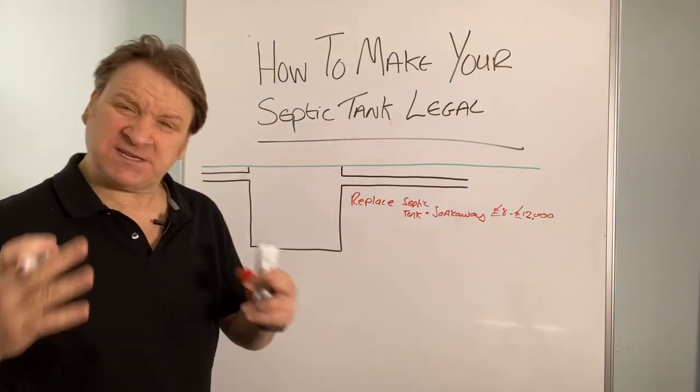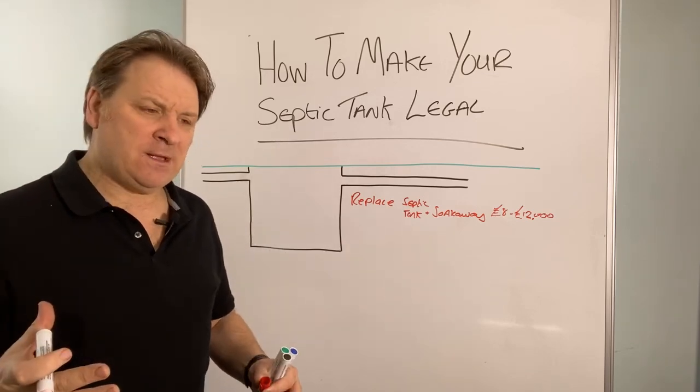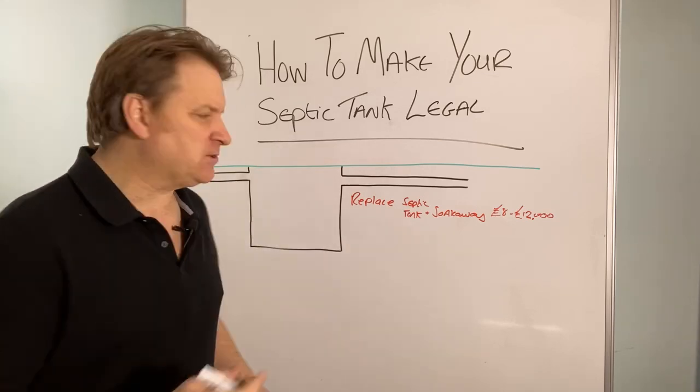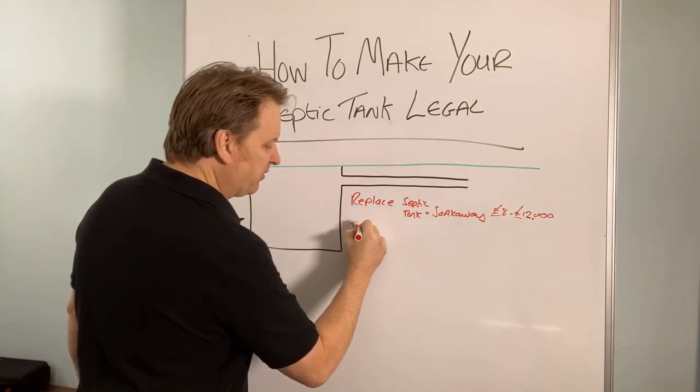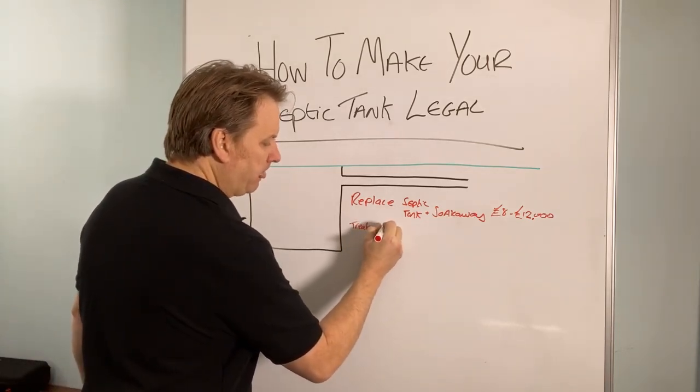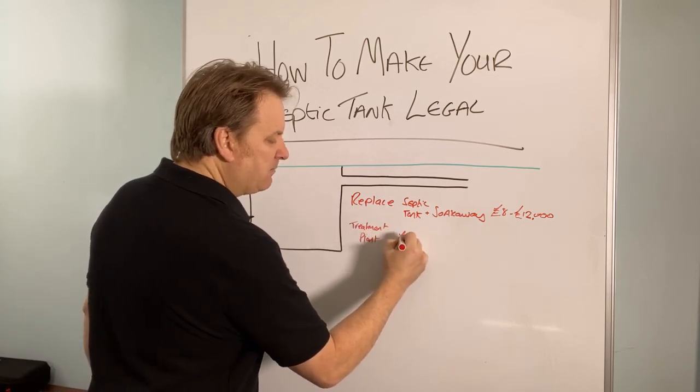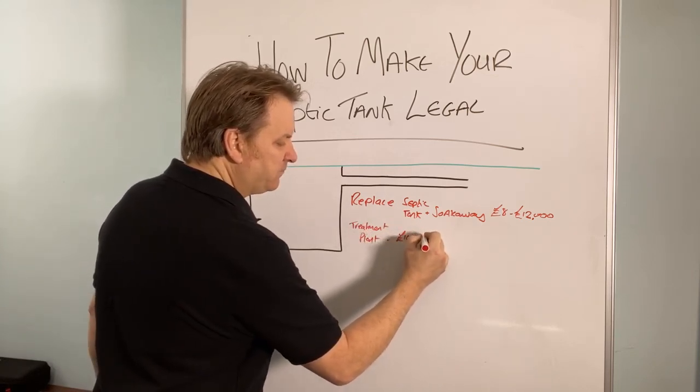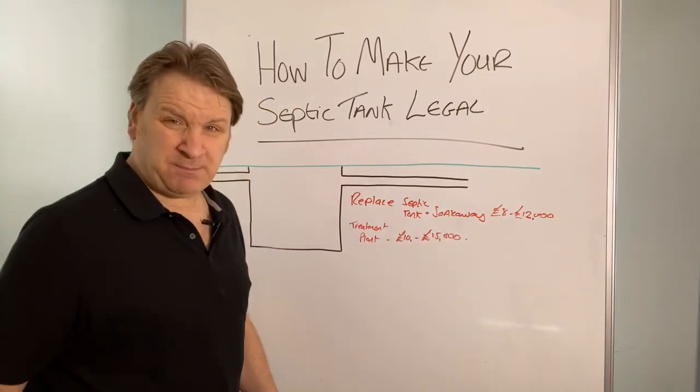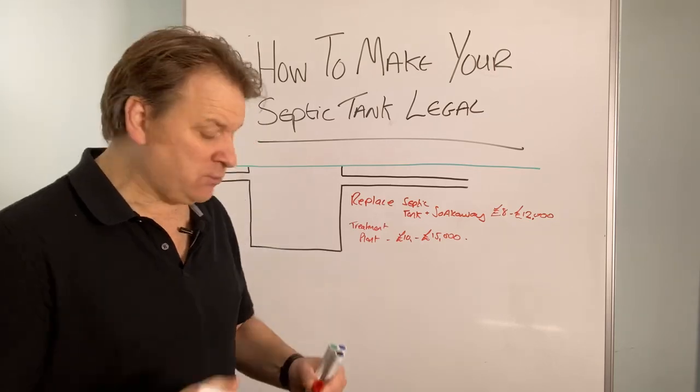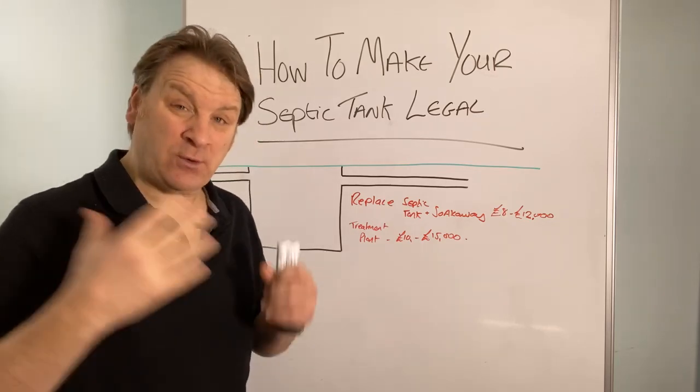Now, if you decide to go for a treatment plant, which is a posher version of a septic tank and soak away, if you replace it with a treatment plant, it's going to cost you anywhere from ten to fifteen thousand pounds. So that's a lot of money, but that's what it costs to replace your septic tank and soak away to make it legal.